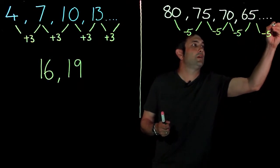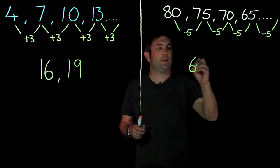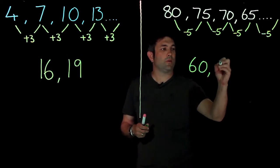And 65 take away 5 is 60, 60 take away 5 is 55.